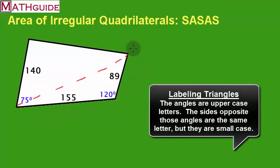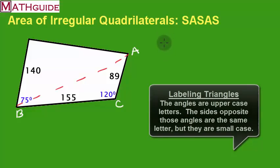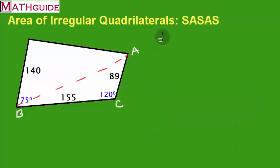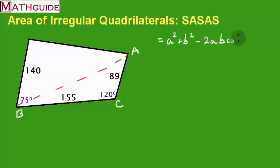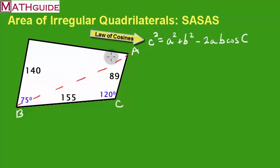To use the law of cosines I have to label the triangle using letters. I'm going to call this angle A, this angle B, and this angle C. The law of cosines says to find the side opposite big C — that's little c, the diagonal. The formula is: little c squared equals A squared plus B squared minus 2AB cosine of big C.